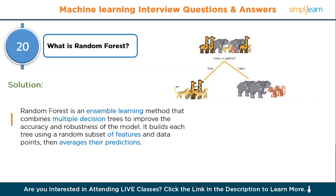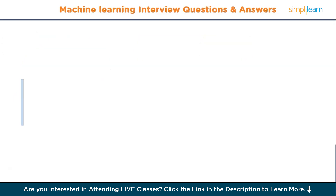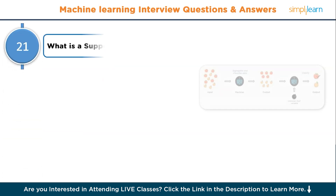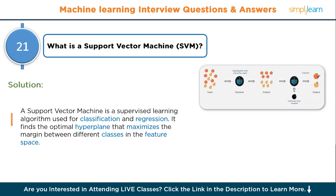Those were the intermediate level questions — mostly theoretical questions that can be asked in an interview, so be prepared. Now moving to the advanced level interview questions, covering ten questions. Question number twenty-one: what is a support vector machine? A support vector machine is a supervised learning algorithm used for classification and regression. It finds the optimal hyperplane that maximizes the margin between different classes in the feature space.